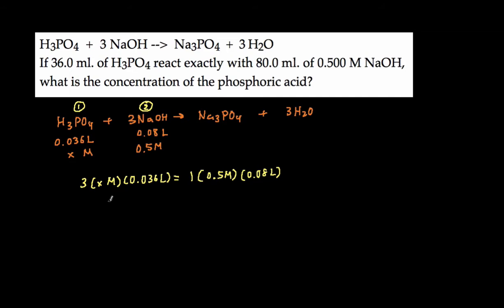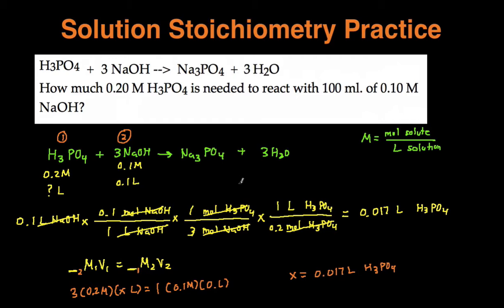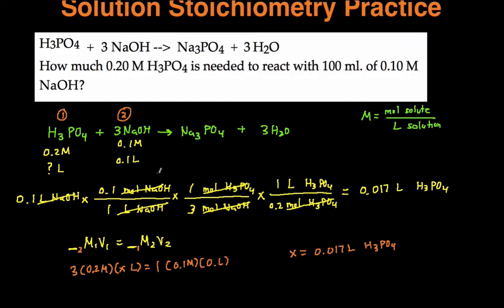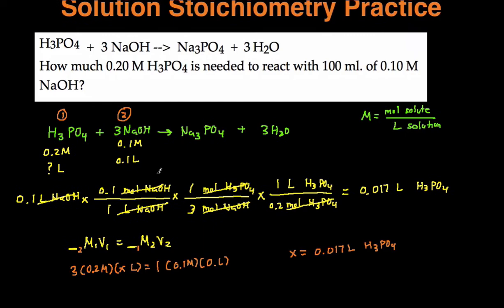So plug that into your calculator using algebra. And then when we solve for x, we get x equals 0.37 molar of 1, which is H3PO4. And that's it. That's how you do solution stoichiometry practice problems. You can do it the stoichiometry way using dimensional analysis, or you can do the shortcut where you do M1V1 equals M2V2, but then you just switch the coefficients like we did in these two problems.